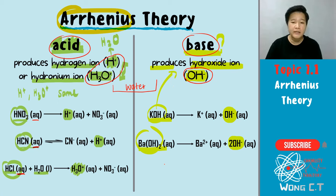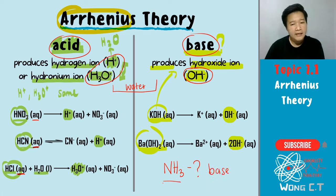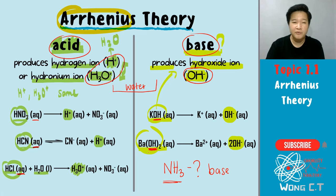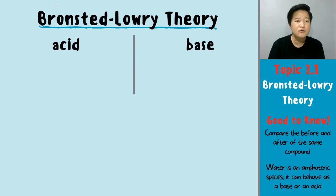The next question is: how about NH3? We know that NH3 is also a base, but if you look at NH3, it is not holding any OH− like your KOH or barium hydroxide. So why or how do we categorize ammonia, NH3, as your base? Simple — that is where your Bronsted-Lowry comes in.